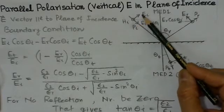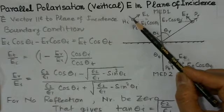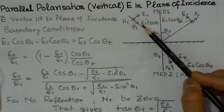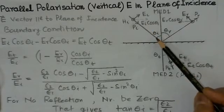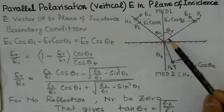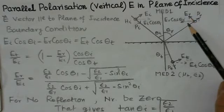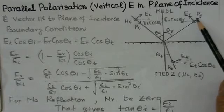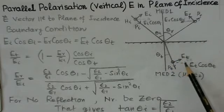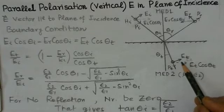If the electric field is in the plane of incidence, the magnetic field would be normal to it. In this case, the magnetic field is coming out of the paper. E_I cross H_I will give the direction P_I, which is the direction of power flow into the medium. Similarly, the reflected ray also has the electric field in the plane of incidence, but the magnetic field is coming out of the paper to make P_R as indicated. The electric and magnetic fields are 90 degrees apart, and this is the case of parallel polarization.